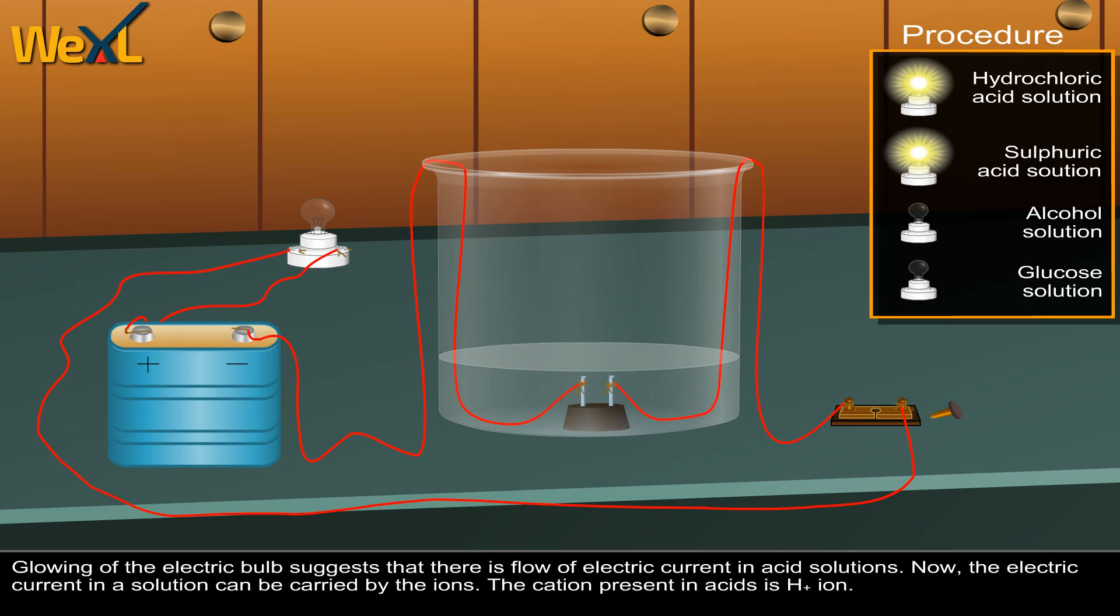Glowing of the electric bulb suggests that there is a flow of electric current in acid solutions. Now the electric current in a solution can be carried by ions.